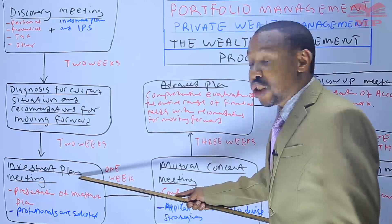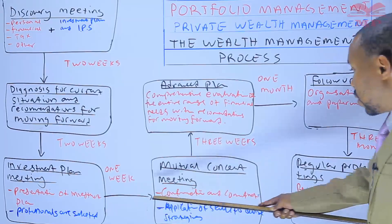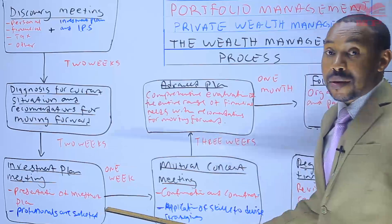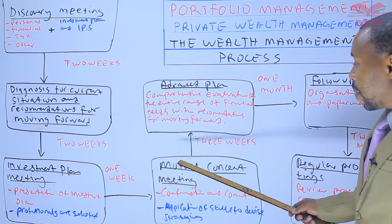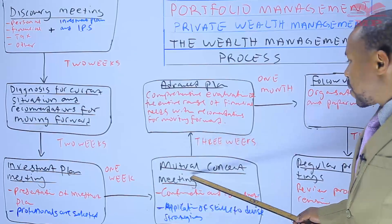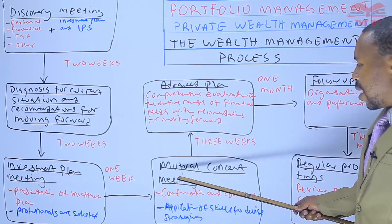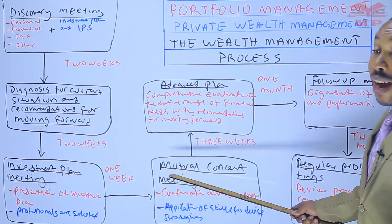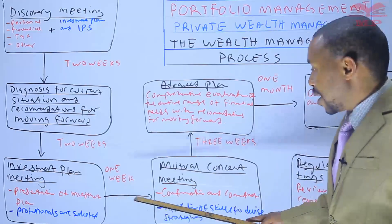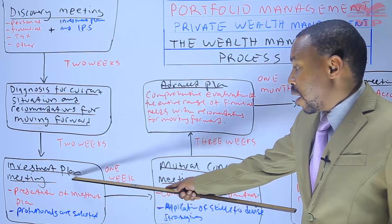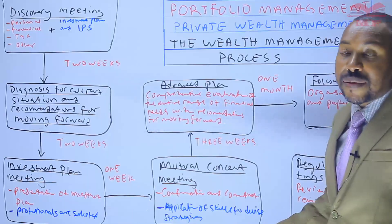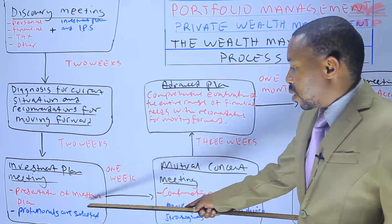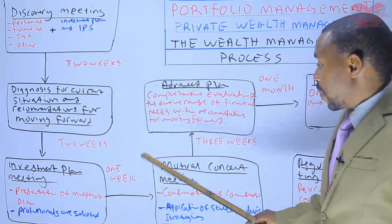From the investment plan meeting to the mutual consent meeting, the wealth managers and the private clients come up with a form of contract — an investment management agreement. The investment management agreement stipulates whether the private wealth clients actually agree with the investment plan that has been devised for them. If they disagree, then we need to go back to the previous step and do another presentation, and different professionals are selected based on the objectives and constraints.